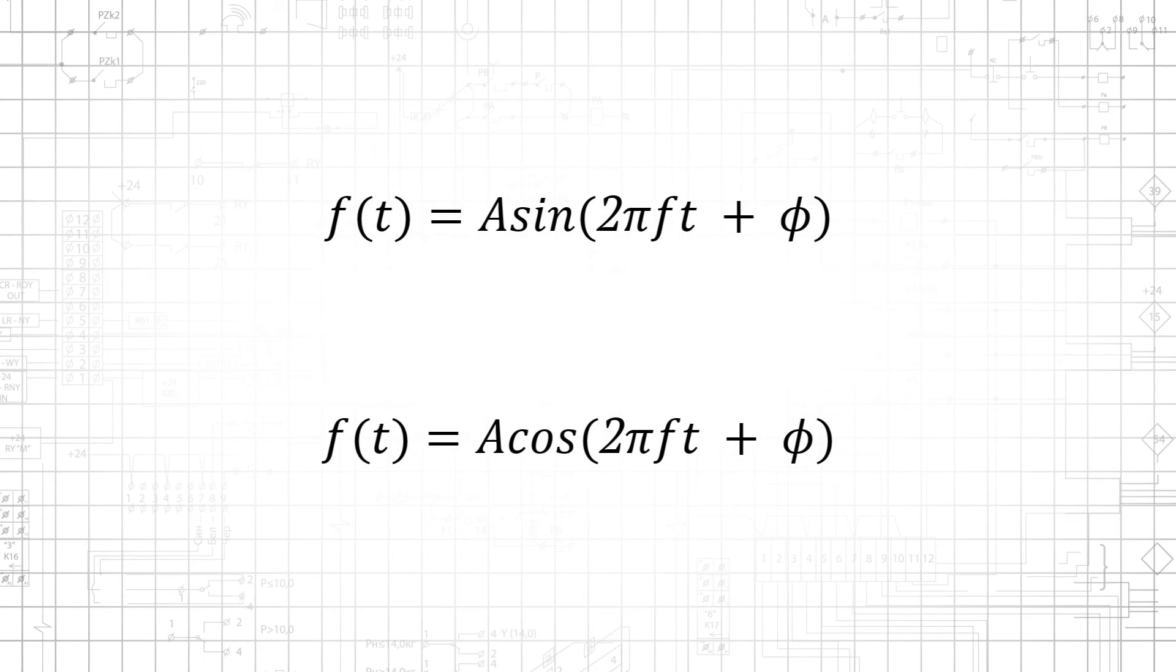The mathematical equivalent for the real sinusoids that we use in our circuits to account for different amplitudes, frequencies, and phase shifts is shown here. Amplitude is denoted by the letter A, frequency by F, and phase by the Greek letter phi.